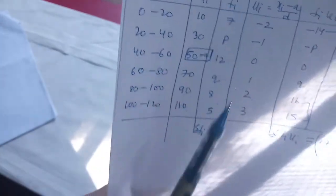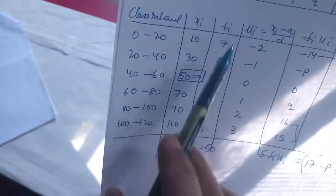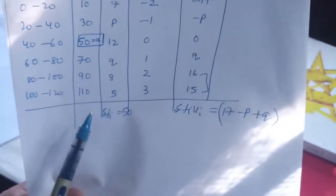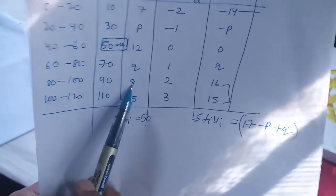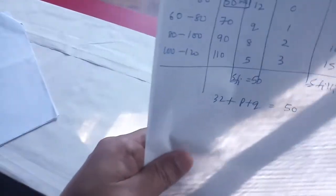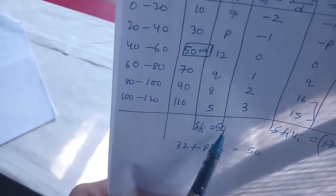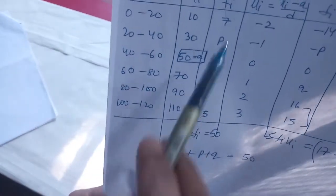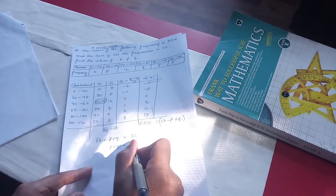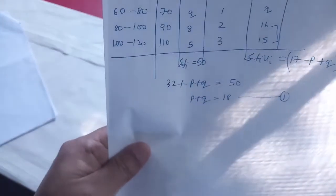For the first equation, we use the fact that the sum of all frequencies is given as 50. Adding the known values: 7 + 12 + 8 + 5 = 32. So 32 + p + q = 50, giving equation 1: p + q = 18.